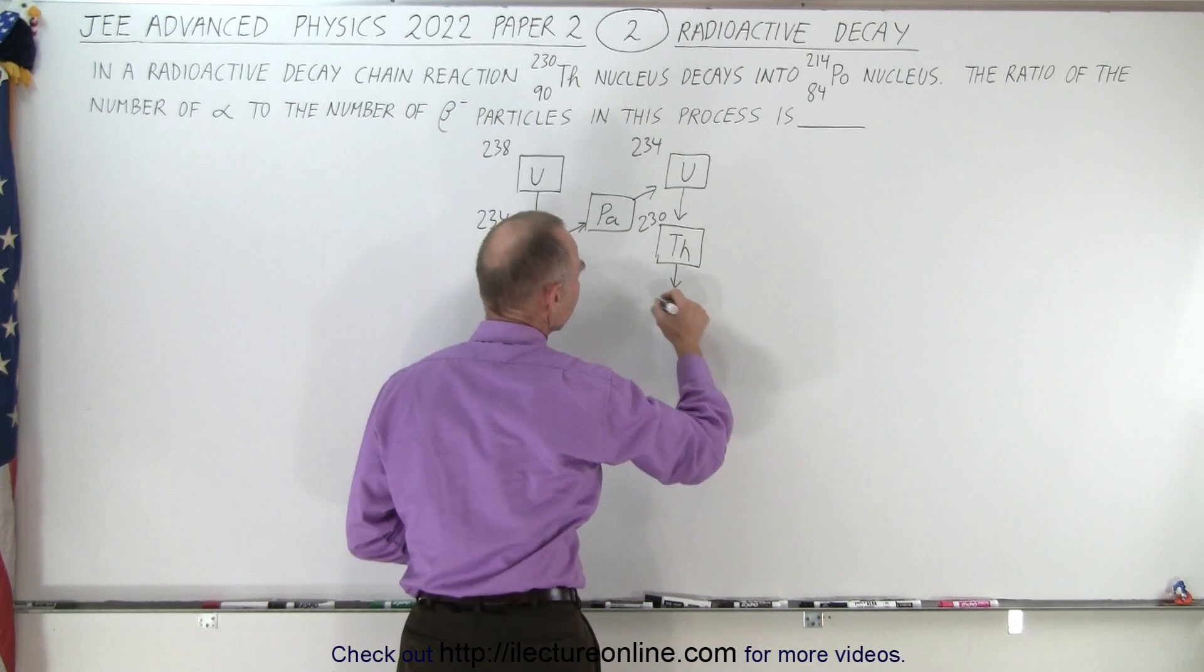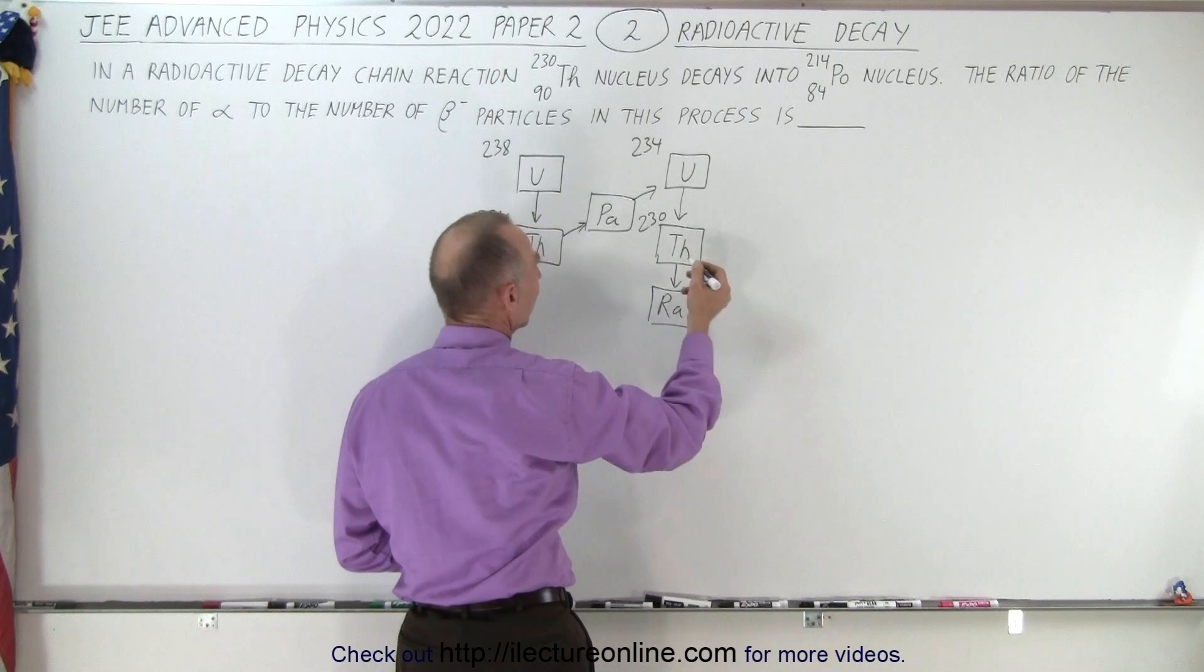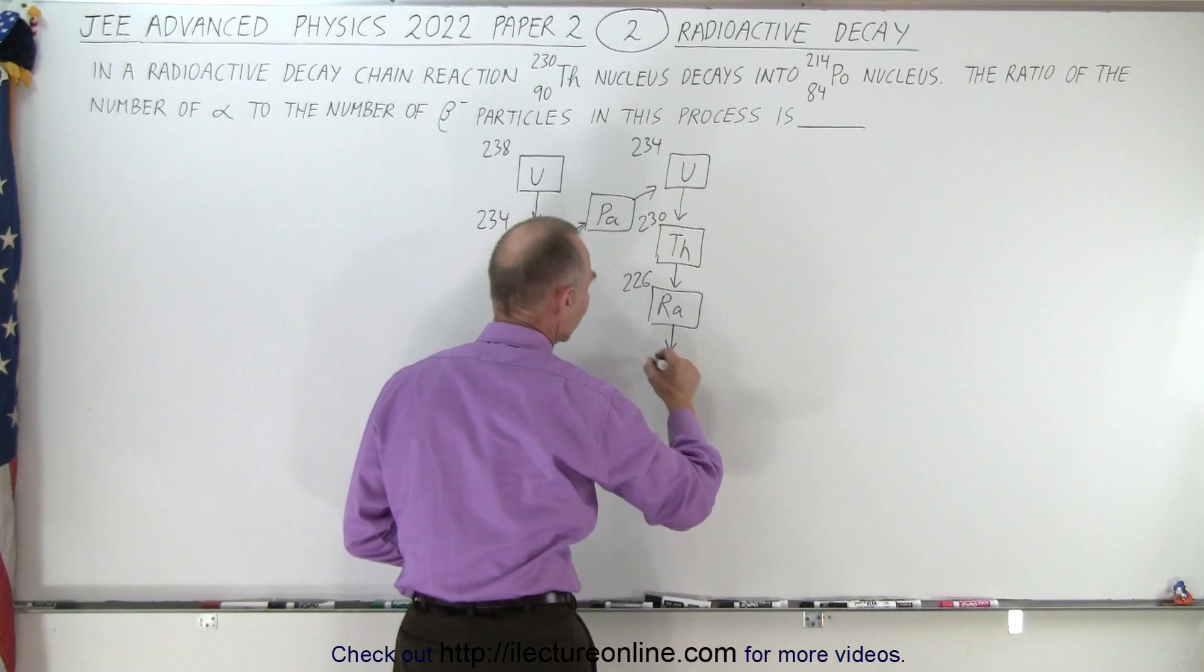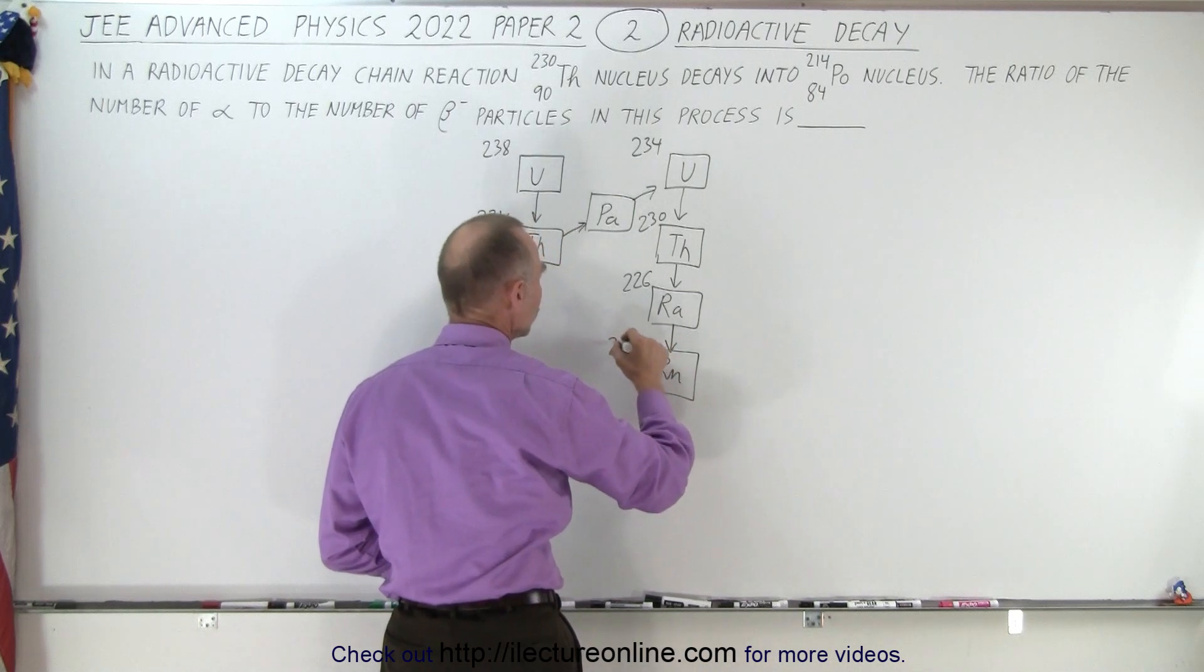And that will be an alpha decay that goes to 226, and then we have another alpha decay to radon gas, so that will be 222.